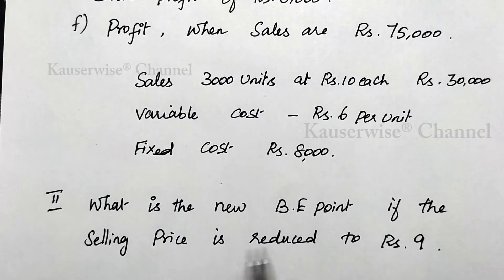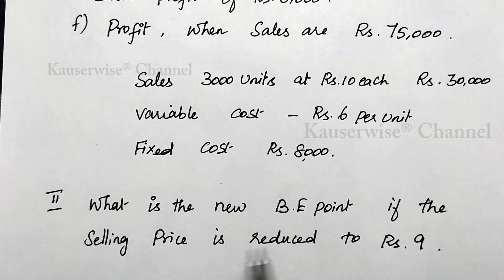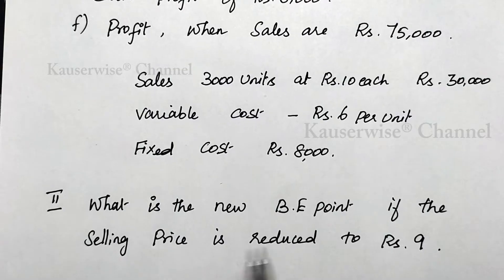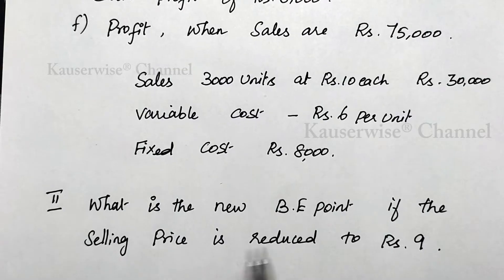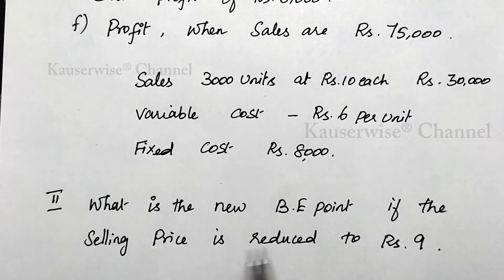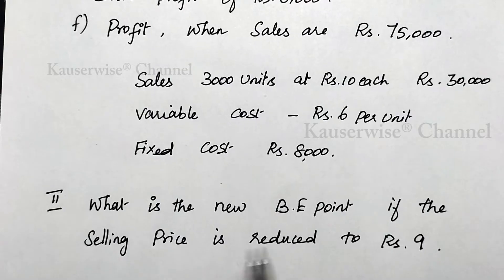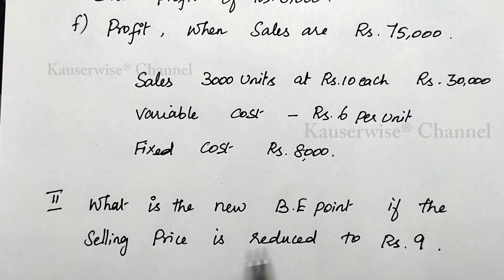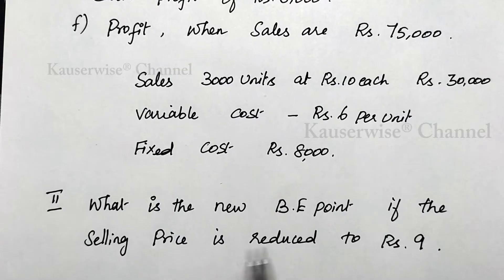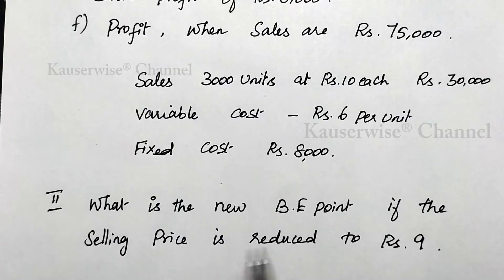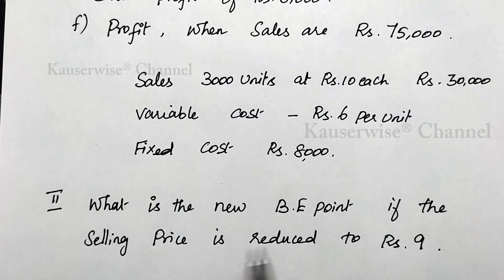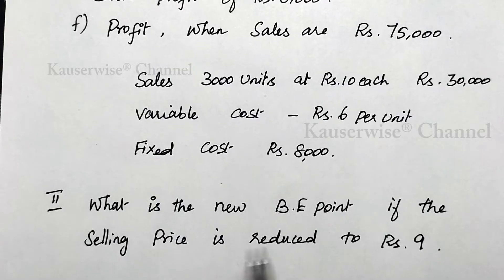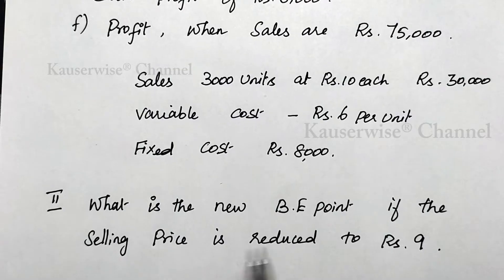Now we need to calculate the fourth component, margin of safety. The formula is actual sales minus break-even sales. Break-even sales (just calculated) is Rs. 20,000. Actual sales from the marginal costing statement is Rs. 30,000. So: 30,000 minus 20,000 = Rs. 10,000. This is margin of safety in rupees.